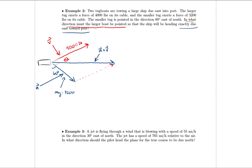We express u and v in component form. For u with magnitude 3,200 and angle negative 30 degrees (equivalently 330°) from the positive x-axis: x component is 3200cos(−30°), y component is 3200sin(−30°). For v with magnitude 4,000 and unknown angle theta: x component is 4000cos(θ), y component is 4000sin(θ).